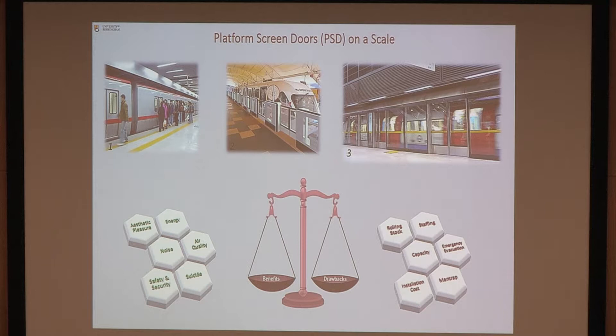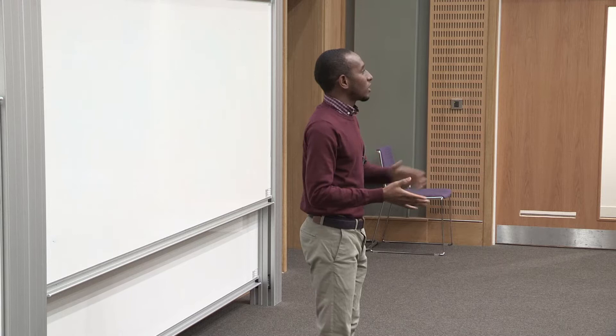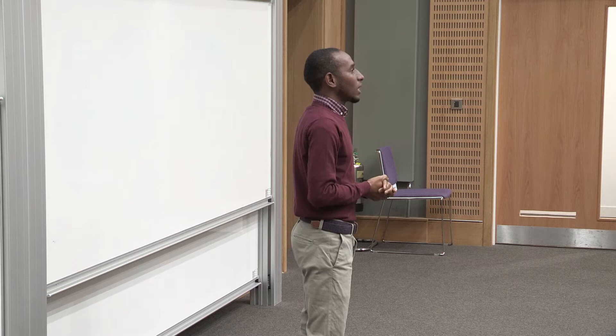Now, why am I doing this? PSDs cost a lot - about 15,000 euros per linear meter. Imagine if you have a platform of hundreds of meters, multiple platforms in a train station, and multiple stations in the city. That's going to be a huge amount of money. So we cannot install PSDs everywhere on every platform.